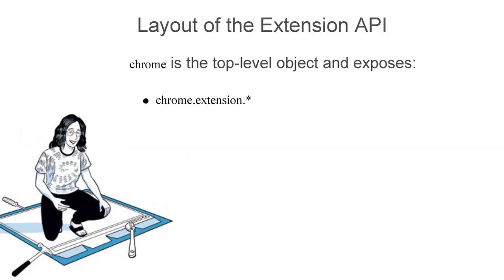The extension API is small and easy to learn. It currently defines about 40 objects and 40 methods. Chrome is the name of the top-level object automatically exposed to all extensions. The API is split into six modules, which are represented by objects contained in the Chrome object. Chrome.extension has properties and methods that let you send messages to communicate between extension components and resolve the URLs of extension files. Chrome.browserAction lets you set the appearance of browser actions and their badges, which are tiny text areas overlaid on browser actions.